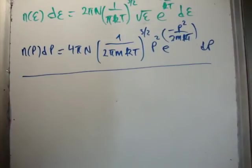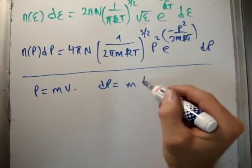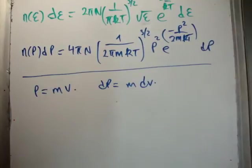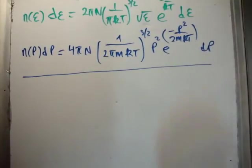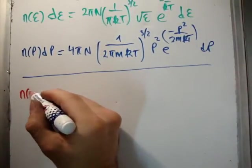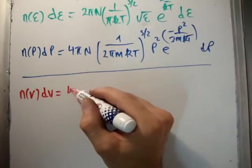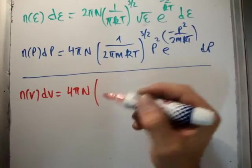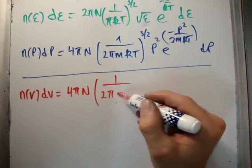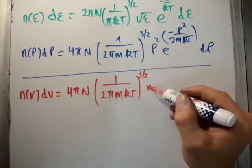And finally, let's go get this density of states in scalar velocity. So, we know that p is equal to m v and dp is equal to m dv. So, we see that there is actually only a factor of m in the difference. So, it should be pretty straightforward and pretty obvious that the next density of states in scalar velocity space is 4pi n 1 over 2pi m kt to the 3 over 2 m v squared.